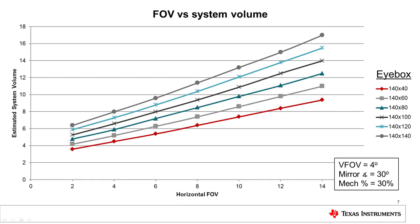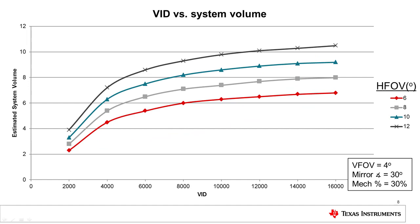Increasing or decreasing the FOV shows an almost linear change in overall volume. Smaller FOV and iBox combinations can have volumes below 8 liters, while AR HUDs with the largest FOV and iBox specifications can approach 18 liters with traditional optics. Changing VID will have a significant effect on mirror size and overall volume at short VIDs — there is a significant volume increase changing the VID from 2 meters to 6 meters, but very little difference for VIDs greater than 6 meters.